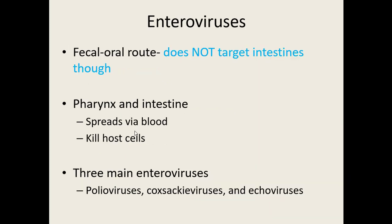The enterovirus group is still within Picornaviridae. Anything with 'entero' relates to the intestines, but these viruses don't target the intestines — they're grouped here because they're all spread fecal-orally. Most cause issues with the pharynx; they can pass through and spread via blood around the body, infecting various cells and usually killing their host cells. The three main enteroviruses are the poliovirus, the coxsackieviruses, and the echoviruses.